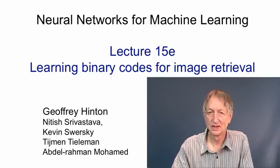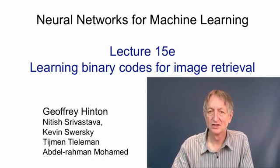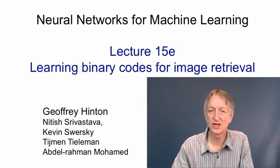In this video, I'm going to talk about the use of binary codes for image retrieval. For retrieving documents, people like Google have such good methods already that techniques like semantic hashing may not be of much value. But retrieving images is much more difficult. And methods that convert an image into a fairly large binary code of, say, 256 bits, seem to work quite well.